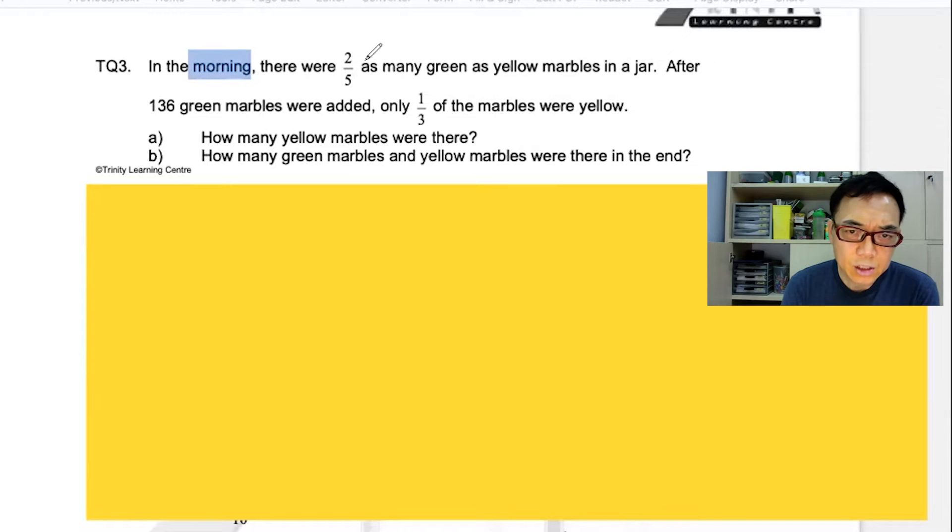Morning. Two-fifths. As many green as yellow. Here, you don't have the word of. But behind one-third, you have the word of. So there are different ways of doing this kind of questions.